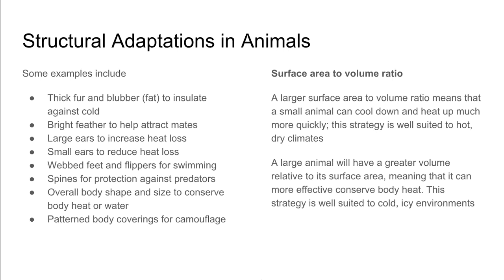Animals have different structural adaptations. They may have thick fur and blubber, or fat, which insulates them against the cold. Bright feathers help attract mates. Large ears increase heat loss, while small ears reduce heat loss. They may have webbed feet or flippers designed for better swimming, spines for protection against predators, and an overall body shape and size that enables them to conserve heat or water. They may also have patterned body coverings that allow for camouflage.